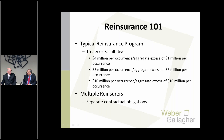Here's a typical reinsurance program. An example — applicable to either treaty or facultative — would have an initial layer of $4 million per occurrence in the aggregate excess of $5 million per occurrence, then a $5 million per occurrence/aggregate excess of $5 million per occurrence, and a $10 million per occurrence/aggregate excess of $10 million per occurrence. There can be multiple reinsurers — recalling the quota share portion, you might have more than one insurer taking a piece of the cedent's risk, handled under separate contracts.